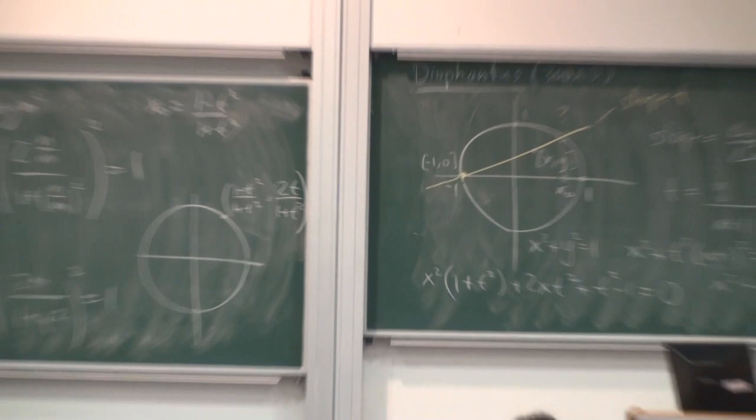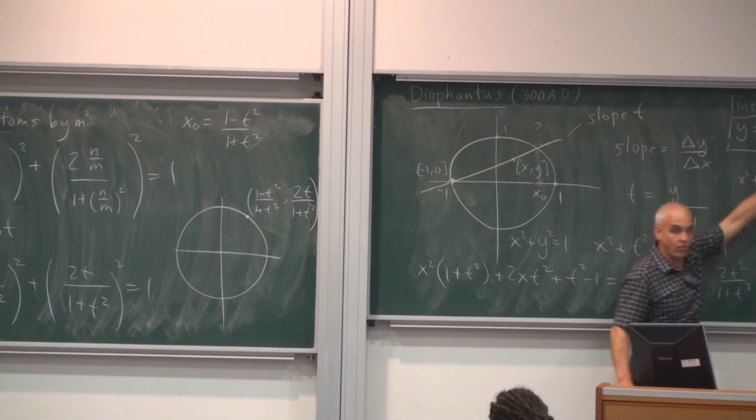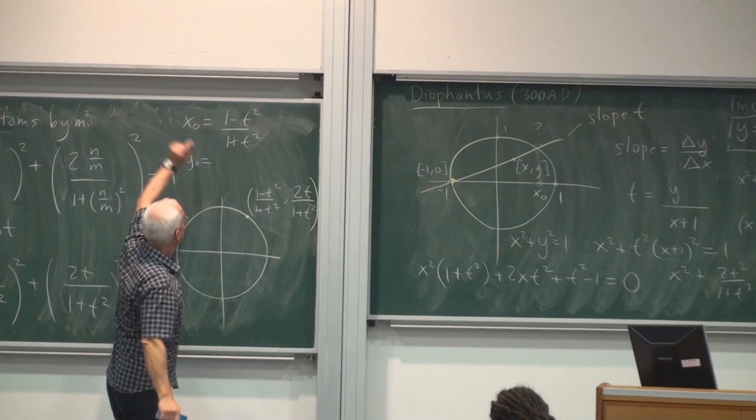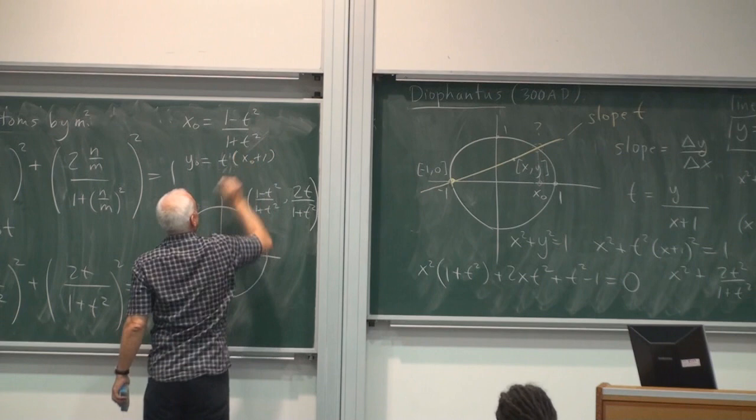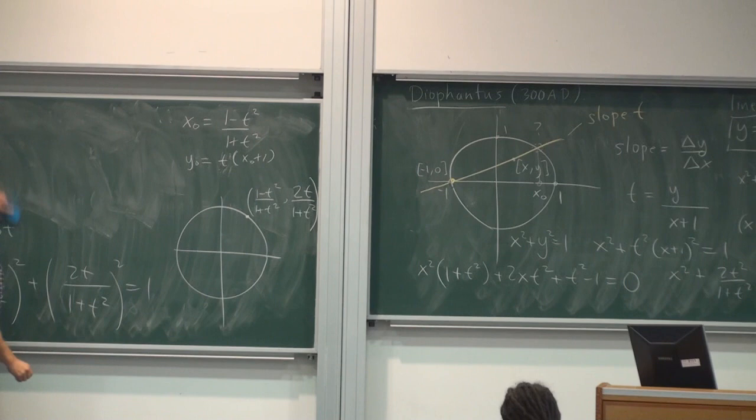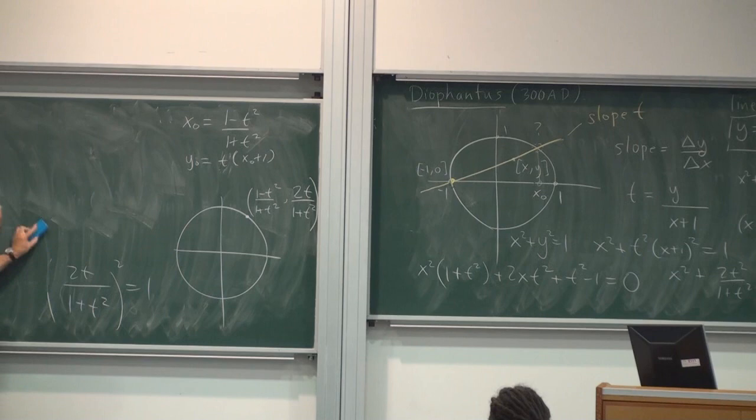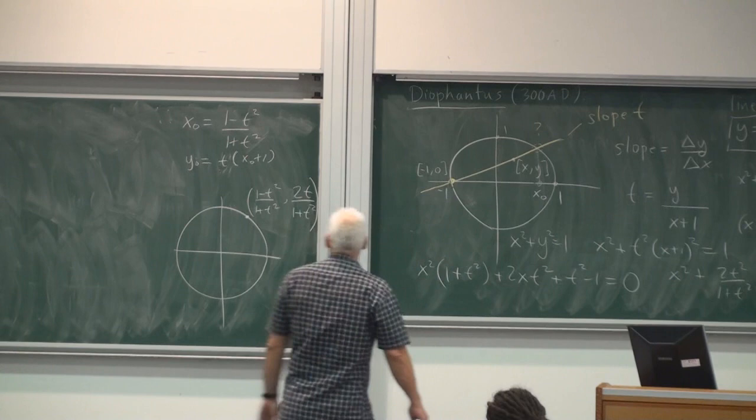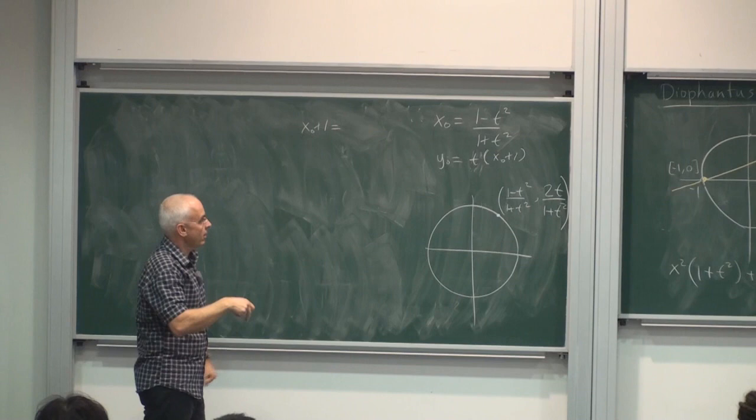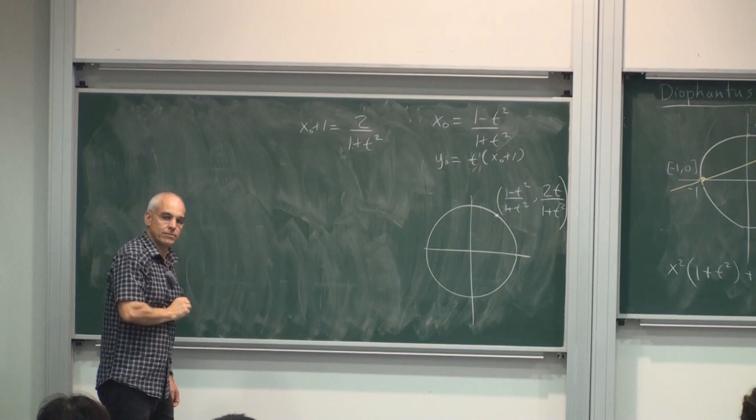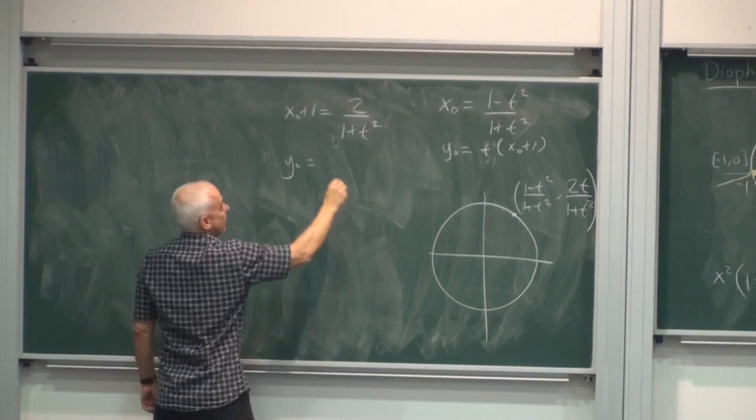Now what is y? y is t times (x + 1), call it y₀. So you have to take t times this plus 1. So it's t times x₀ + 1. And what will that be? x₀ + 1 will be equal to 2/(1+t²). And so, therefore, y₀ will be t times that, so it will be (2t)/(1+t²).